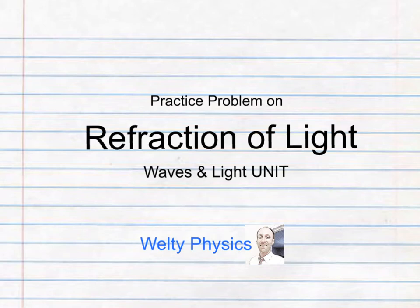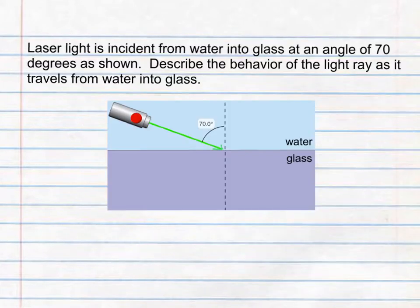Practice problem on the refraction of light. Laser light is incident from water into glass at an angle of 70 degrees as shown. Describe the behavior of the light ray as it travels from water into glass.